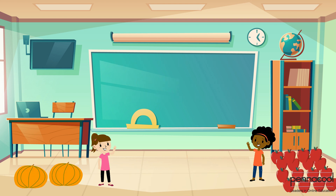Kayla tries to relate the mass of two pumpkins to Taylor in terms of apples. One pumpkin is approximately the weight of eight apples. She asks Kayla how many apples would have the same mass as two pumpkins.